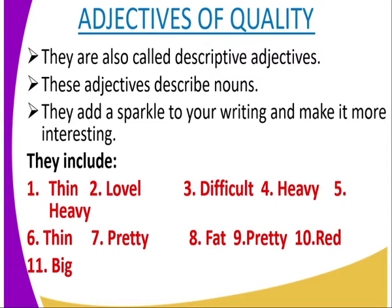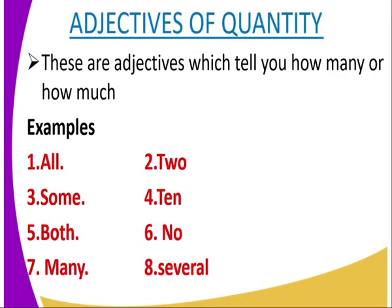Adjectives of quality are also called descriptive adjectives. They describe nouns, add sparkle to your writing, and make it more interesting. Examples include: thin, lovely, pretty, difficult, heavy, fat, red, and big. When we talk of quality, we describe the noun — for instance, 'thin' or 'lovely' tells us more about what we're describing.